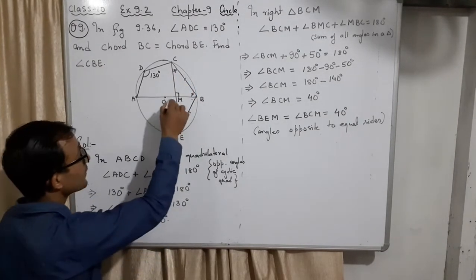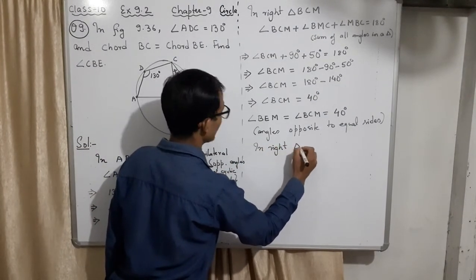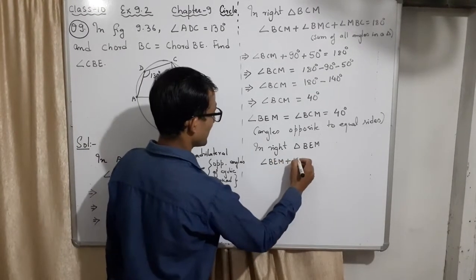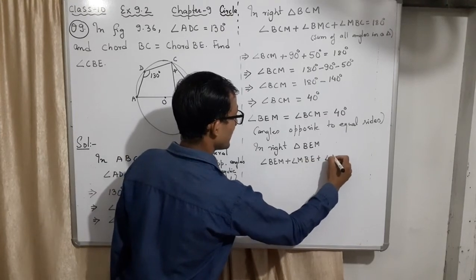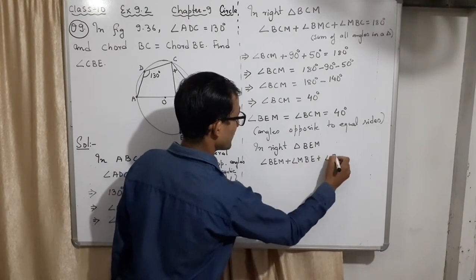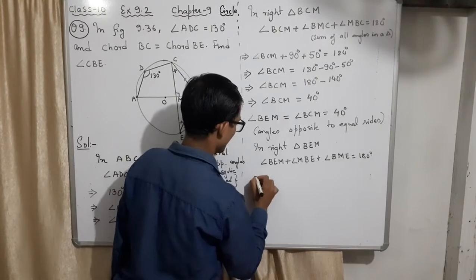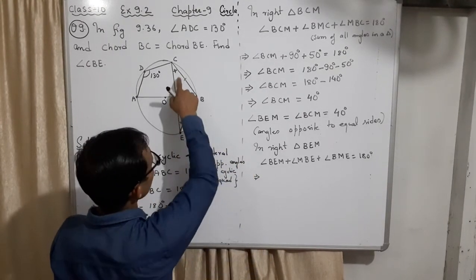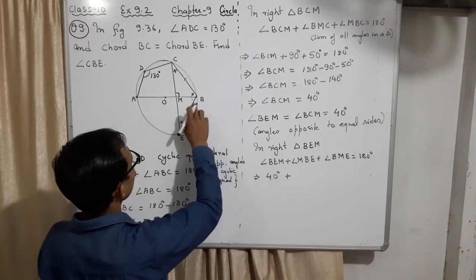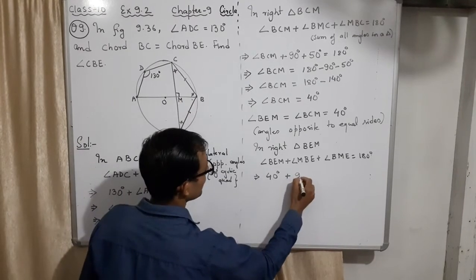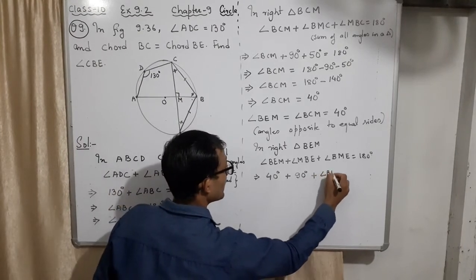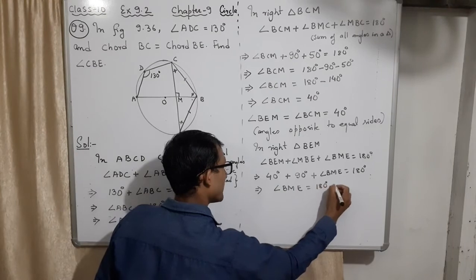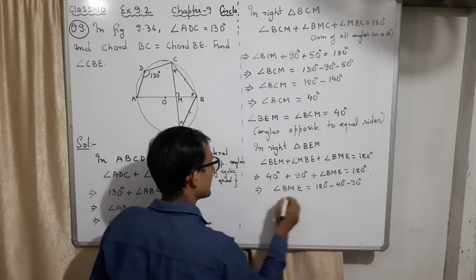So now in this triangle it will become very easy. In right triangle BEM, angle BEM plus angle MBE plus angle BME equal to 180 degrees. What I wanted here is CBE, we'll find it, no problem. It is not... BEM is what? BEM is 40 degrees. BME, BME is 90 degrees. Look at here, because that is a straight line. So because 90, this will also be 90. Angle BME, angle BME equal to 180 degrees. Angle BME equal to 180 degrees minus 40 degrees minus 90 degrees. 40 and 90 is 130. Angle BME equal to...